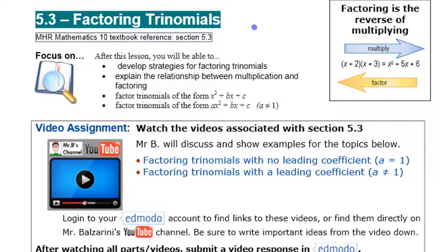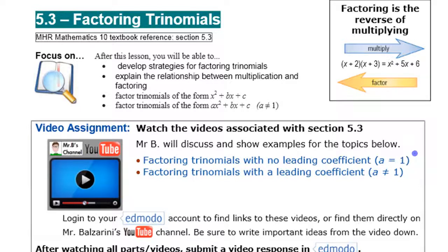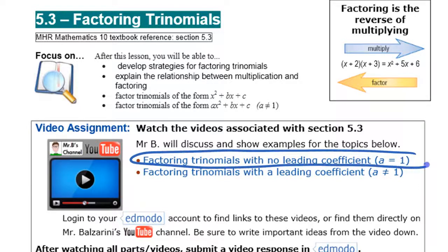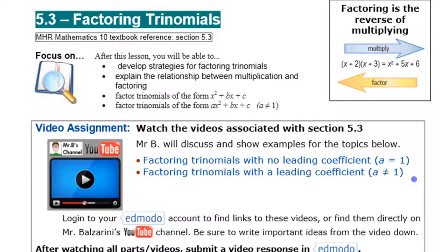We're going to move on now to factoring trinomials — things with three terms. There are a couple of different forms: we'll start with ones that look like x squared plus something times x plus something, and then move on to ones where there's a coefficient in front. First we'll look at factoring trinomials where there's no leading coefficient, where that 'a' value is one.